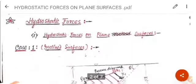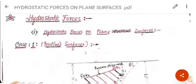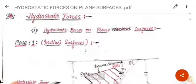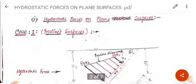What is hydrostatic force? It means the force acting on a body which is in the water or below the water level. For example, if you place a plate in the water, what will be the hydrostatic forces on this plate? There are three types of cases: plates may be vertical, plates may be inclined, or plates may be horizontal. I am discussing here only plane surfaces. Later, we will discuss hydrostatic forces on curved surfaces.